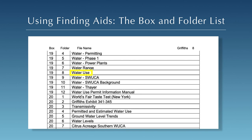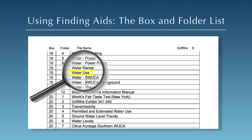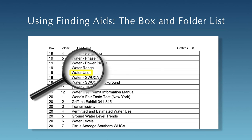When you find a folder title that sounds significant for your research or includes your keyword, also look at the titles around it — there may be similar folders nearby. Remember to think broadly about the topic you are researching as you scan the box and folder list. For example, if your topic is Water Use by Florida Citrus Growers, folders entitled Water Permitting or Water Power Plans might also contain relevant documents for your project.